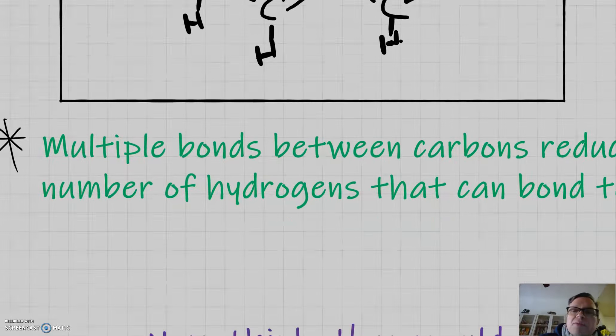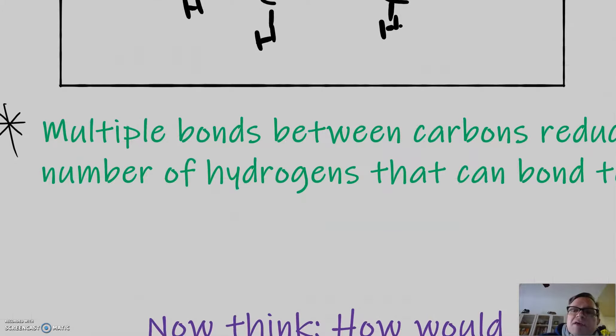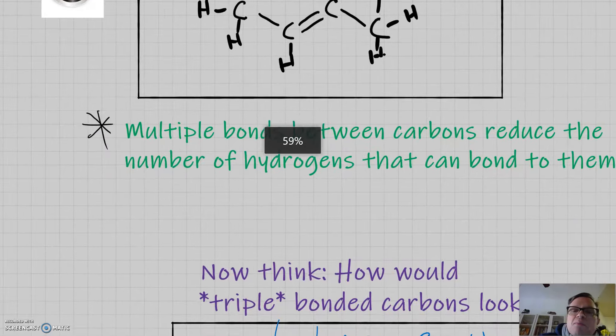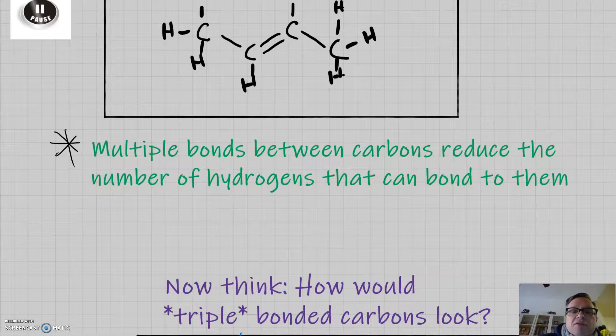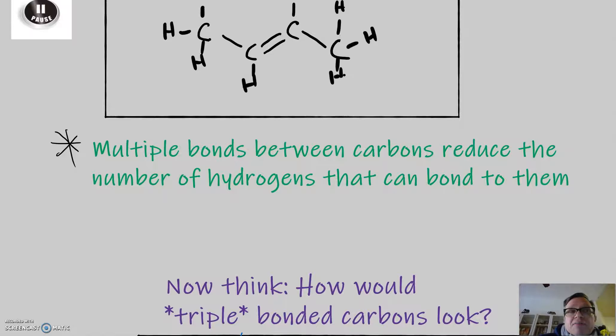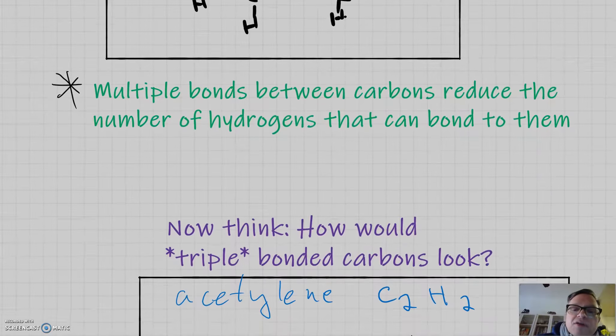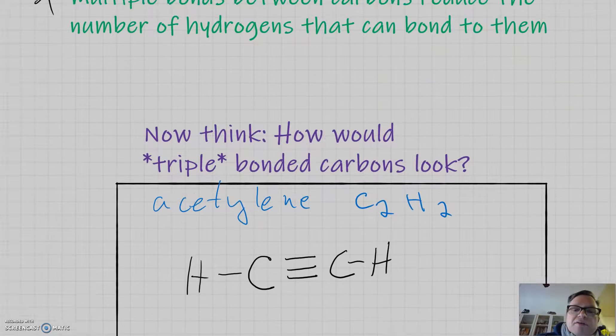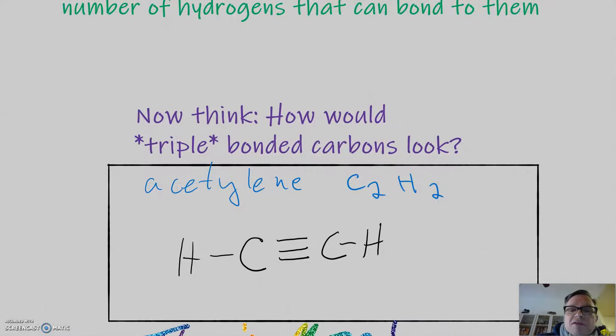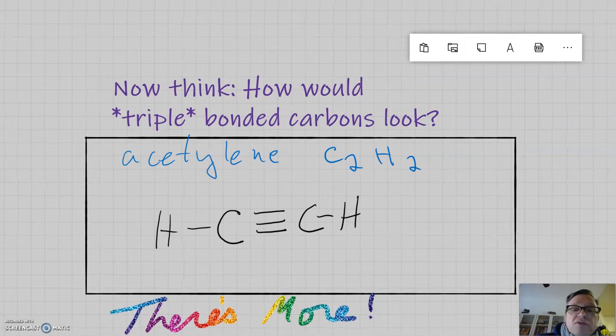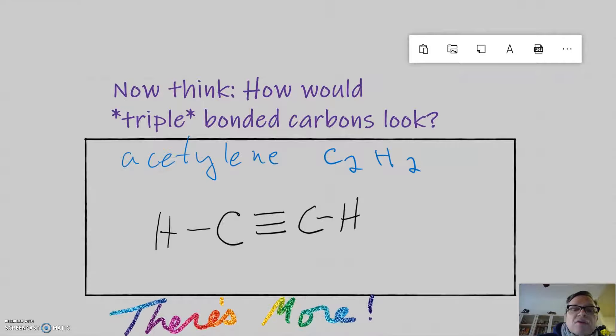The big lesson here is that multiple bonds between carbons reduce the number of hydrogens that can bond to them. Now, let's think about what triple bonded carbons would look like. This is acetylene, C2H2, so two fewer hydrogens than we had before. And, because of this, the carbons need a triple bond between them.